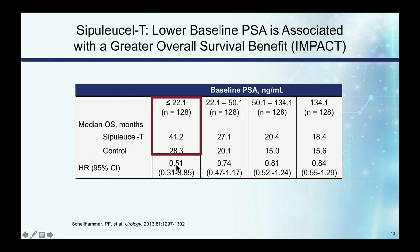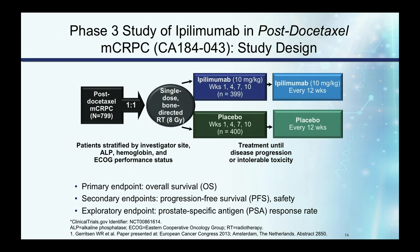Patients with the lowest volume of disease seemed to do best with Sipuleucel-T — a hazard ratio of 0.51 for PSA less than 22, and a 13-month difference in median survival rather than the four-month difference seen in all patients. This suggests that using immune therapy earlier, when disease volume is lower, may give more impact. However, no PSA decline or objective tumor responses were seen, which initially made many skeptical.